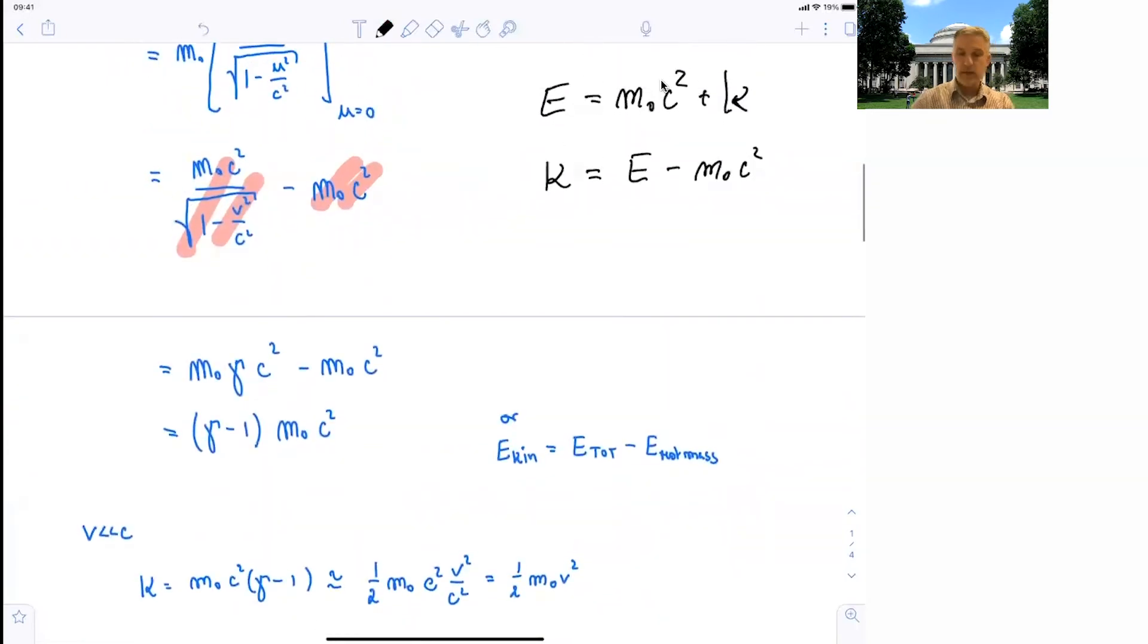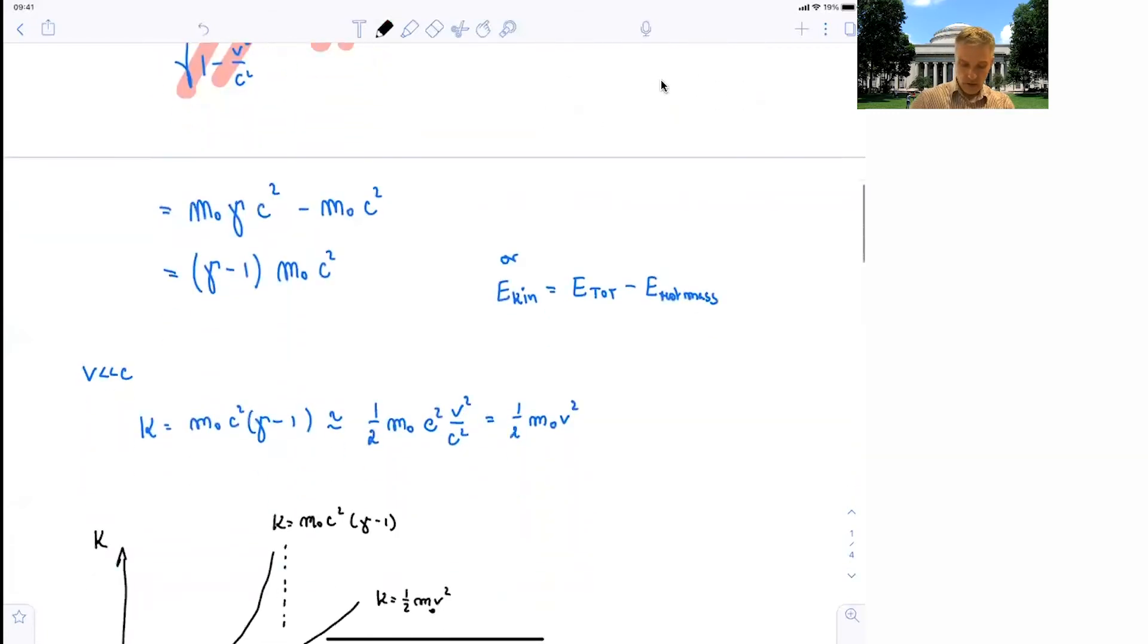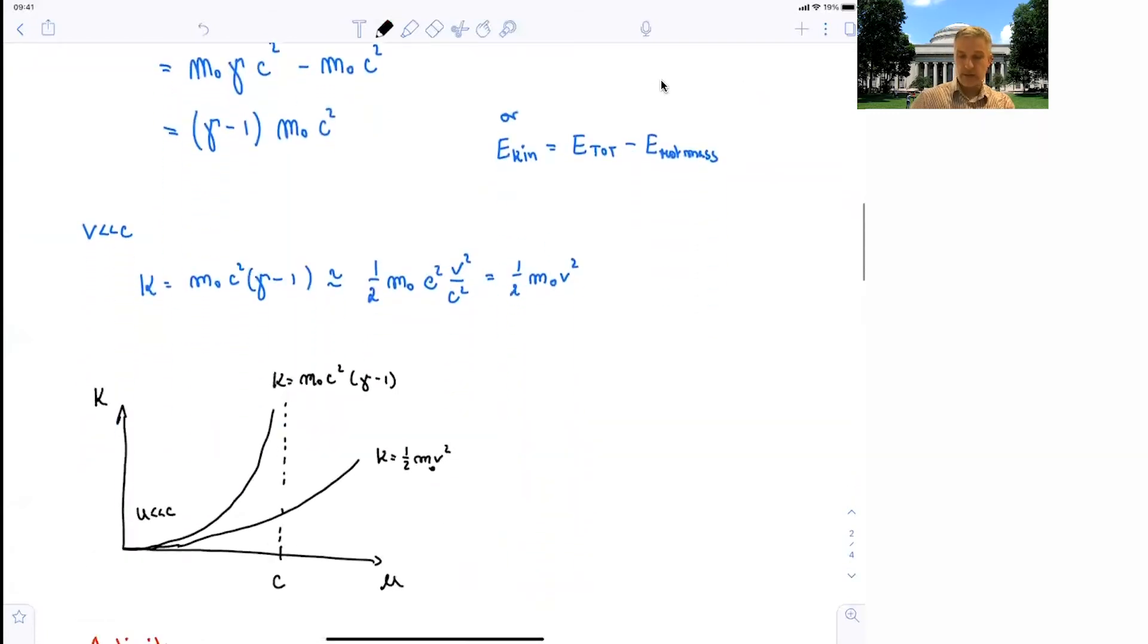So if you now evaluate this for small values of v, as we did before, we find that the kinetic energy is 1/2 m0 v squared. And I find it interesting, illustrative, to plot what this means now. So if you plot the kinetic energy of a particle as a function of its velocity, we find that for small values, those two curves basically overlap.